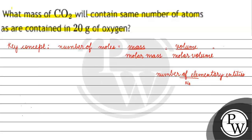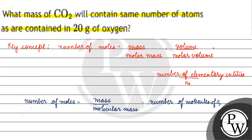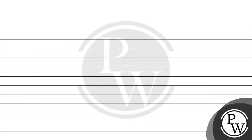Now, the number of molecules of oxygen x equals mass divided by molar mass, multiplied by Avogadro's number. So x equals 20 divided by 32, multiplied by Avogadro's number.